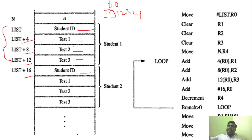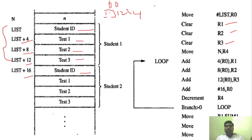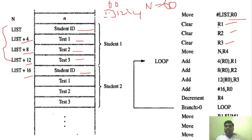If you want to add the test 1 marks for all students, you need three registers: R1, R2, R3 for accumulating the sums. R1 holds the original list address. N is equal to 60 — the number of students — stored in R4. R4 value will be 60, representing the loop counter.